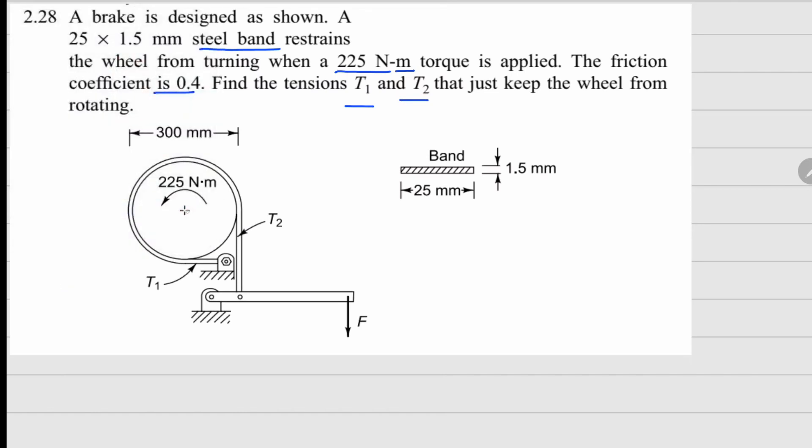To solve this, we draw the free body diagram of the wheel-band assembly. There will be tensions T1 and T2. We can do the moment balance about the center point.